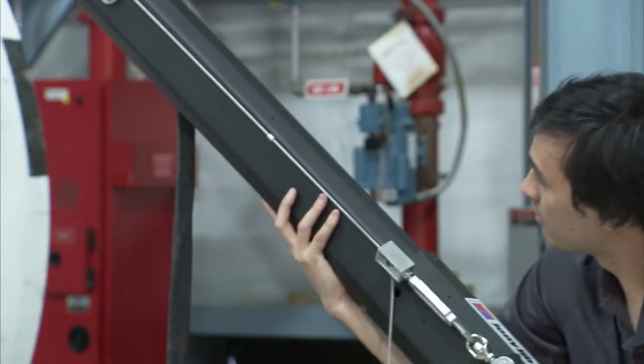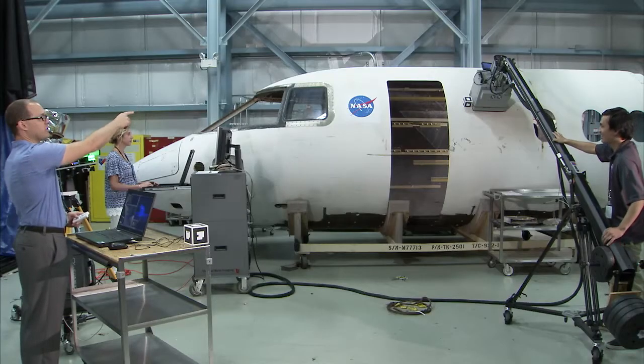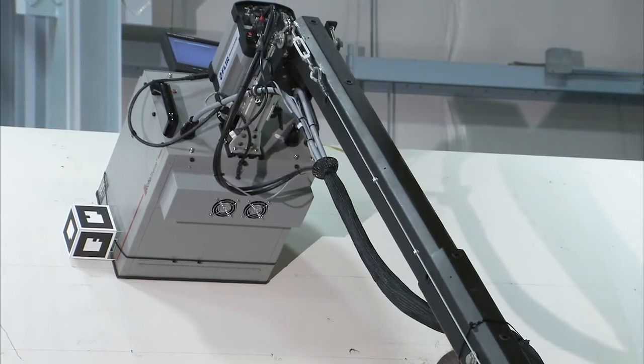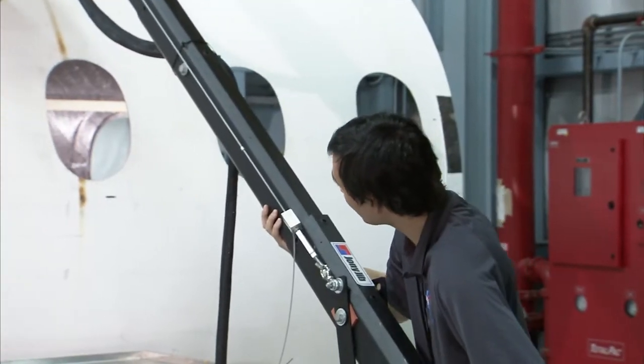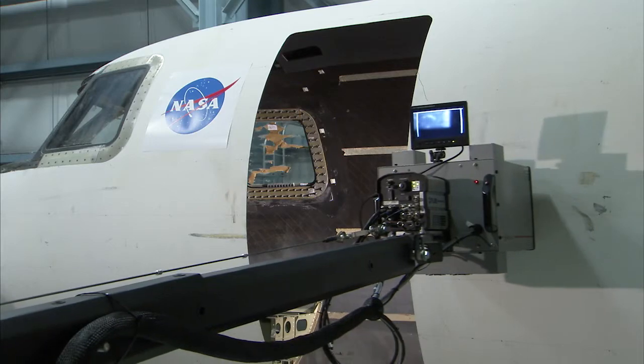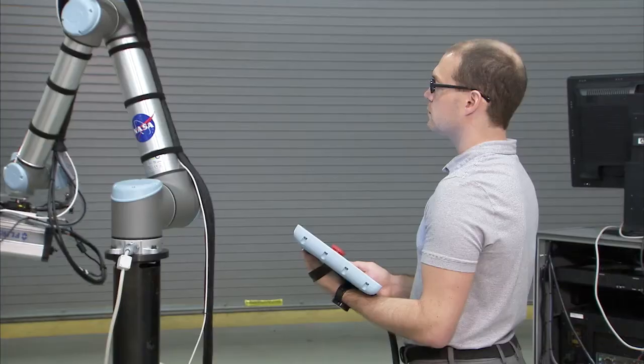If we were to use people to do the same inspection, it would take three or four individuals. It's very difficult to move the infrared inspection system around by hand and get uniform coverage of the whole part. The robot can do that all by itself with just an operator.